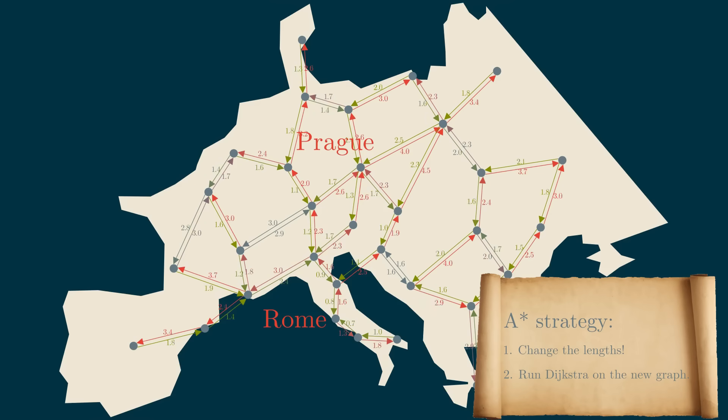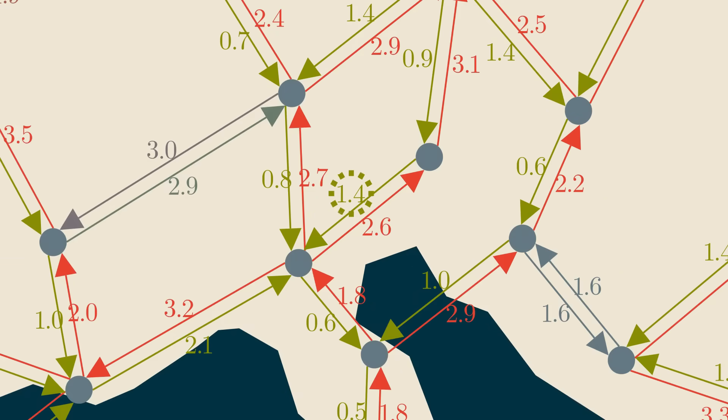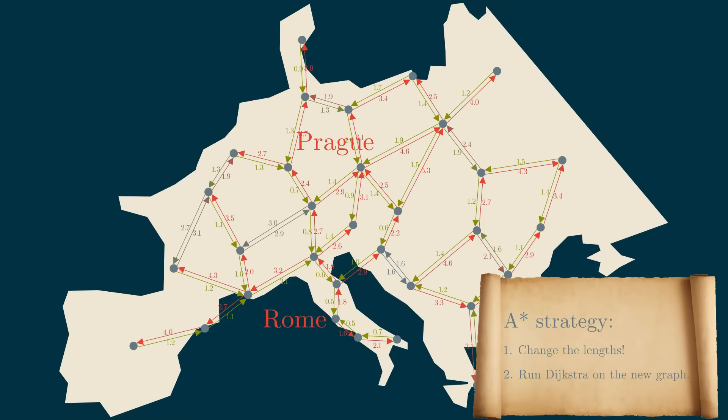Here you can see that I changed the edge lengths in such a way that the edges that get us geographically closer to Rome got shorter, and the opposite edges got longer. If we run Dijkstra on this new graph, the algorithm prefers the edges going roughly in the right direction and finishes sooner, just like we wanted.